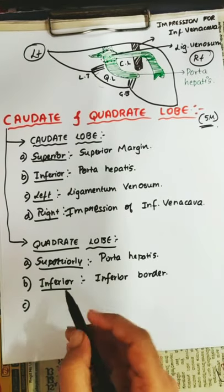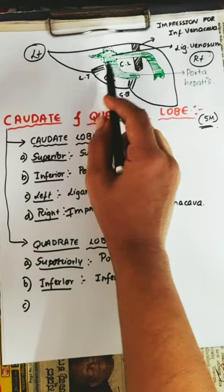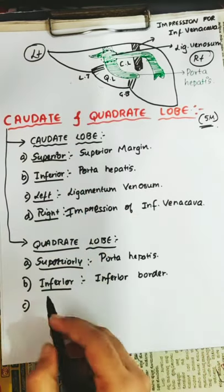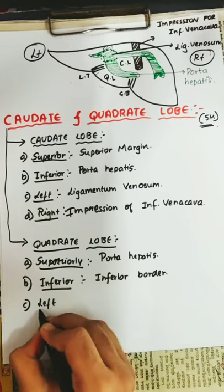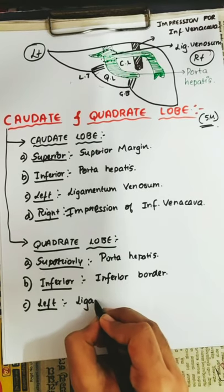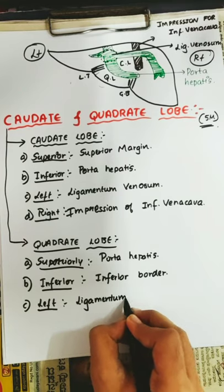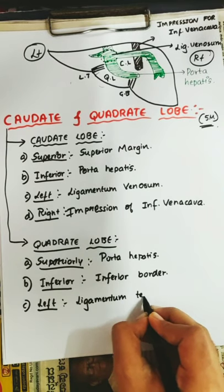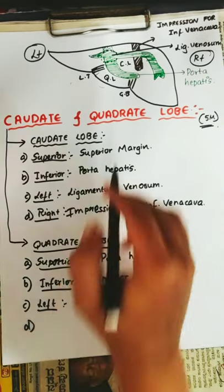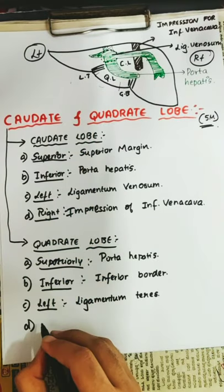On the left side there is presence of ligamentum teres. And on the right side there is an impression of the gallbladder.